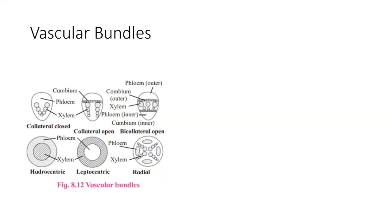My entire topic — anomalous secondary growth — is based upon these basic concepts. So before I go into details of anomalous secondary growth, I would like to spend at least one lecture on the basics. We are starting with vascular bundles. Vascular bundles are bundles made up of vascular tissues — namely xylem and phloem — with or without cambium.